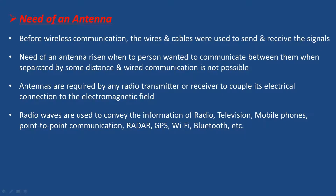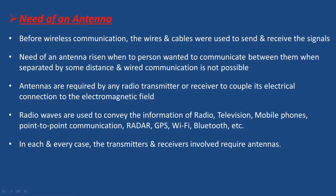Radio waves are used to convey information for radio, television, mobile phones, point-to-point communication, radar, GPS, WiFi, Bluetooth, etc. In this case, the transmitter and receiver require antennas. So for any wireless communication, the transmitter and receiver antennas are compulsory.